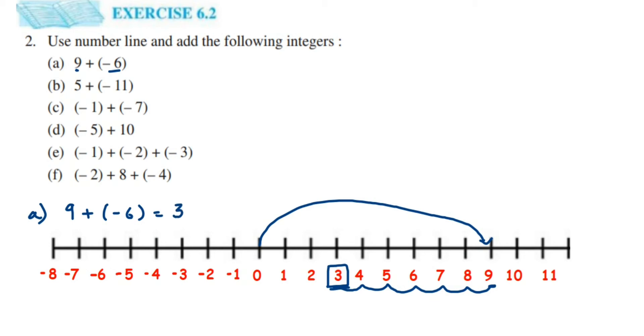So we have to move from 9 to 3 — 6 steps towards the left hand side because 6 is negative. Now that was the first question and let's move on to the next one.